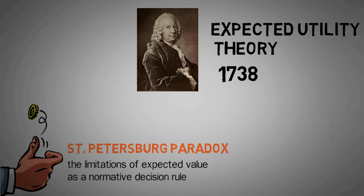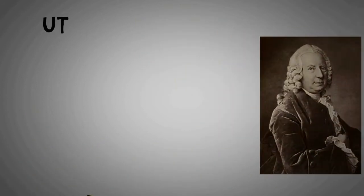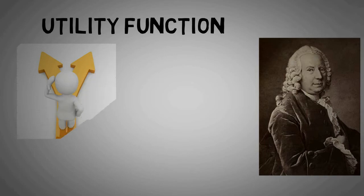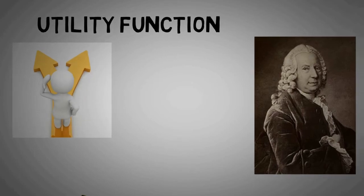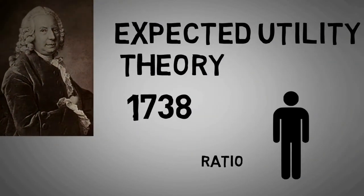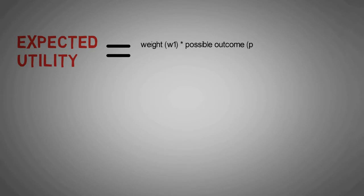He proposed utility function to explain people's choice behavior. He assumed that people try to maximize utility, not expected value. This theory assumes man is rational and tries to maximize utility. The expected utility is calculated by taking the weighted average of all possible outcomes under certain circumstances, with the weights being assigned by the likelihood or probability that any particular event will occur.